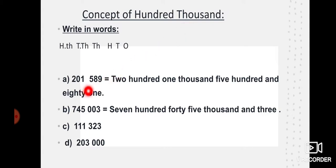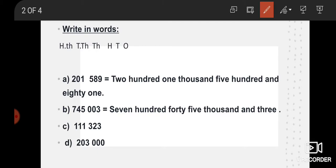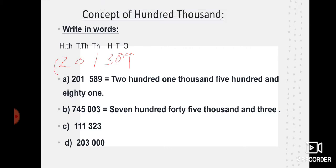So students, if we have to write a number in words, what we will do is simply put whatever value is given to us below this chart. After putting it, our work will become easy — easier. Like, you can see I have put two, zero, one, five, eight, nine below the chart. So students, you can see here: two hundred one thousand three hundred and eighty nine.